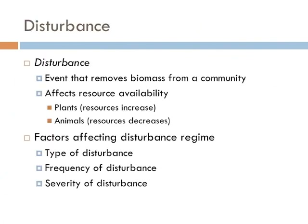In ecological terms, a disturbance is an event that removes biomass from a community, and this directly affects resource availability. For certain species like plants, there is typically more available resources like light and space. For other species including most animals, resources are typically diminished. Several factors determine a disturbance regime: the type of disturbance, the frequency of disturbance, and how severe the disturbance is.